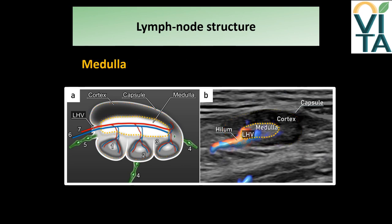The medulla corresponds to the inner central region. It contains large blood vessels and lymphatic tissue, including plasma cells and macrophages. On ultrasound, the medulla is usually visible as a central hyperechogenic structure. The hilum is a depression on the side of the lymph node where blood vessels usually enter and leave, and where the efferent lymphatic vessel leaves. On ultrasound, it is recognized as a hyperechogenic indentation on the concave side of the node, appearing continuous with the medulla.